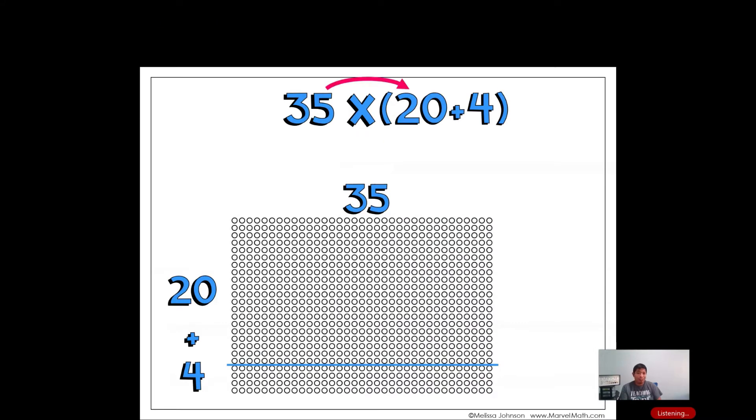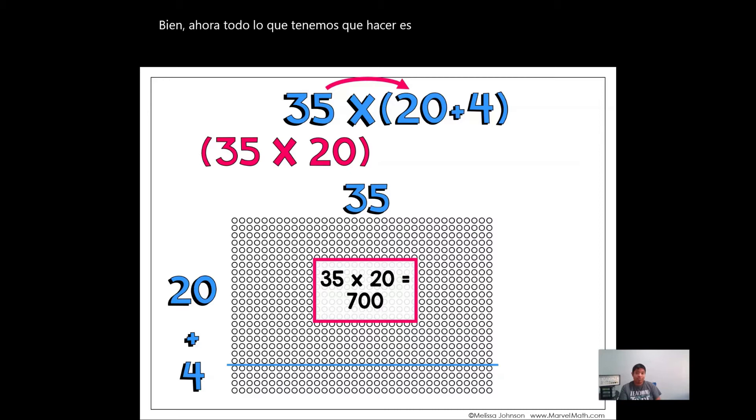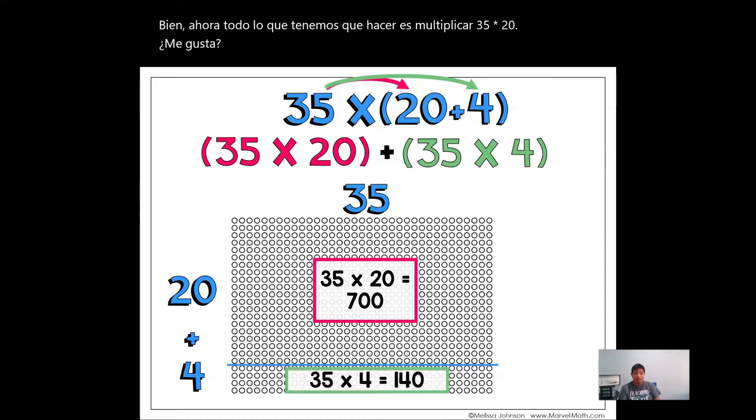So now all we got to do is just multiply 35 times 20 like that. And 35 times 20, the power of 10 is 700. Next, we just multiply 35 times 4, just like that. And our answer is 140.